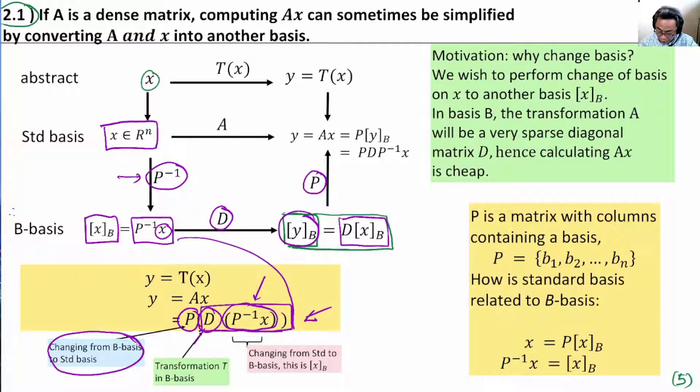So, these three operations, P*D*P^(-1), represent actually A, the transformation in the standard basis.